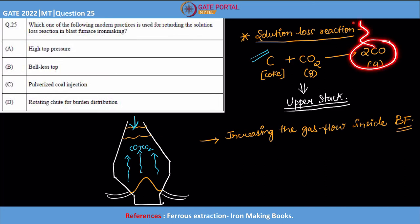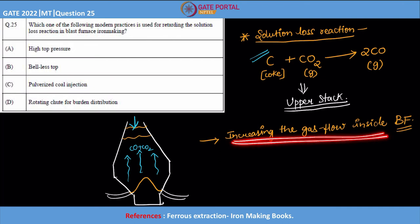Because if this is formed and immediately escaped out, that is a problem because that is not helping in reduction of iron ore. But if you increase the gas flow inside the blast furnace, then automatically the contact time between the CO gas that you have and the iron ore particles will be more. Hence, the better will be the reduction.